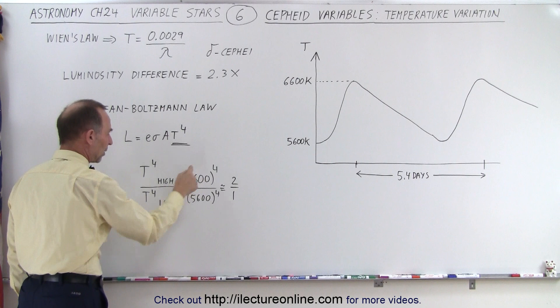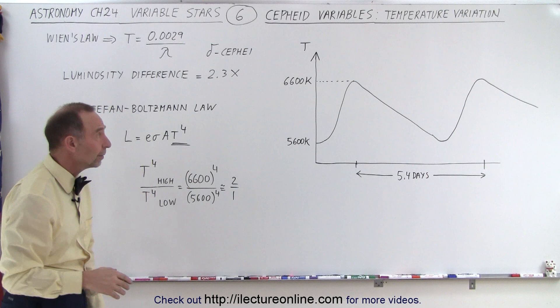If we simply take the temperature portion and raise it to the fourth power, we take the high temperature to the fourth power divided by the low temperature raised to the fourth power, and we see that's about a ratio of 2 to 1.